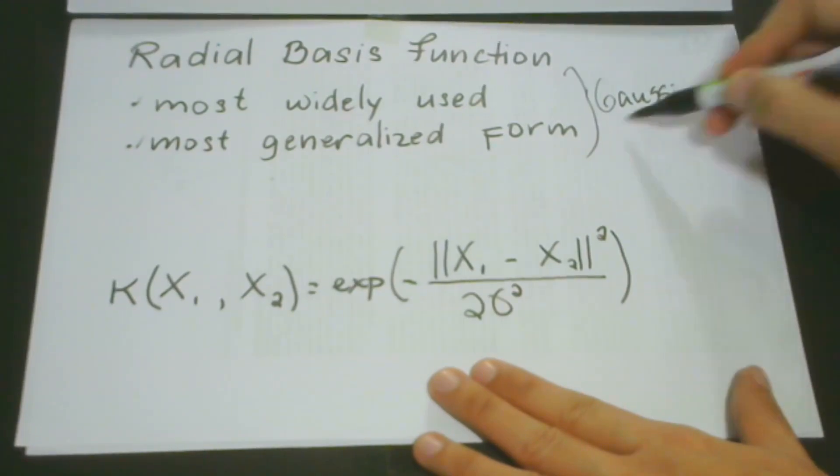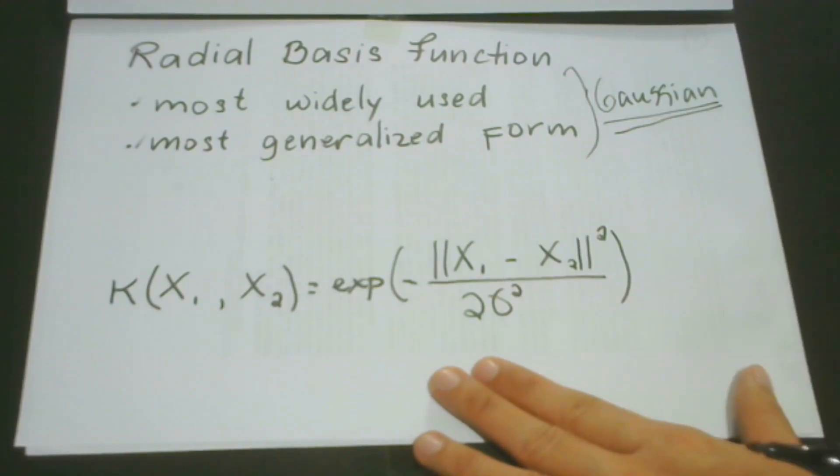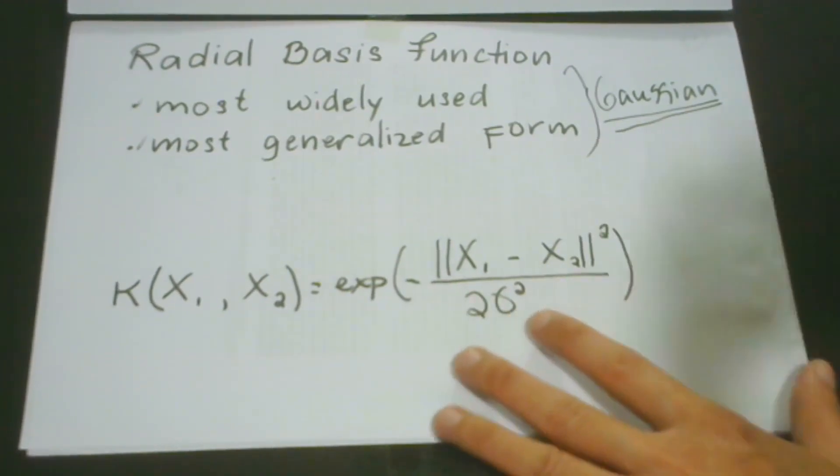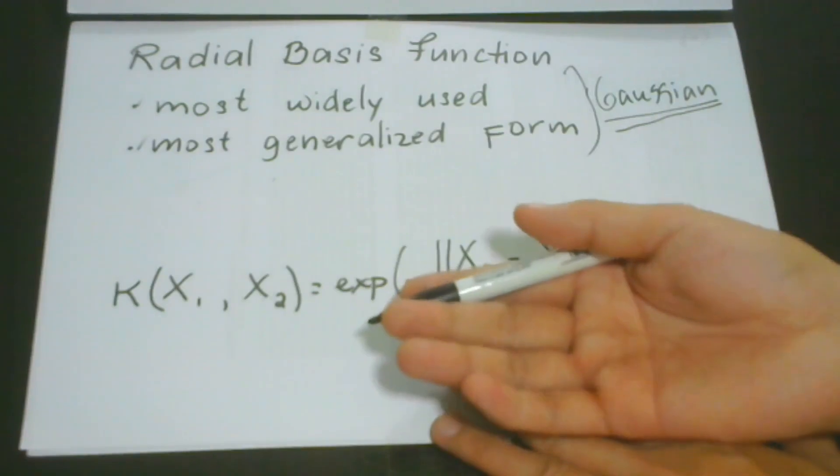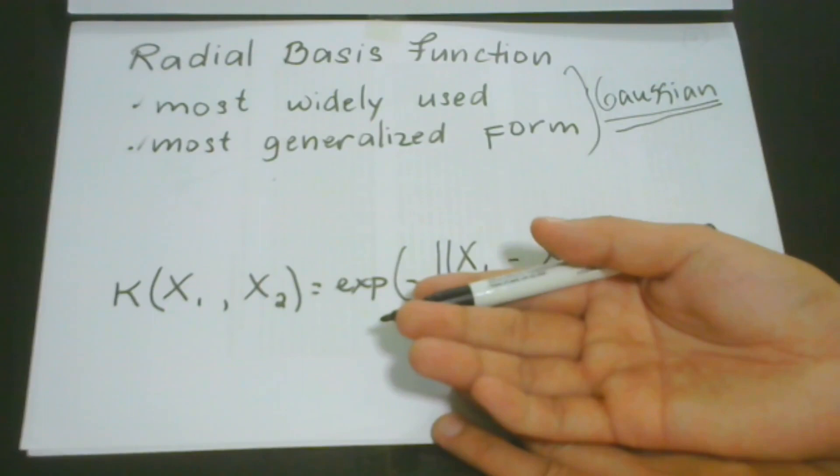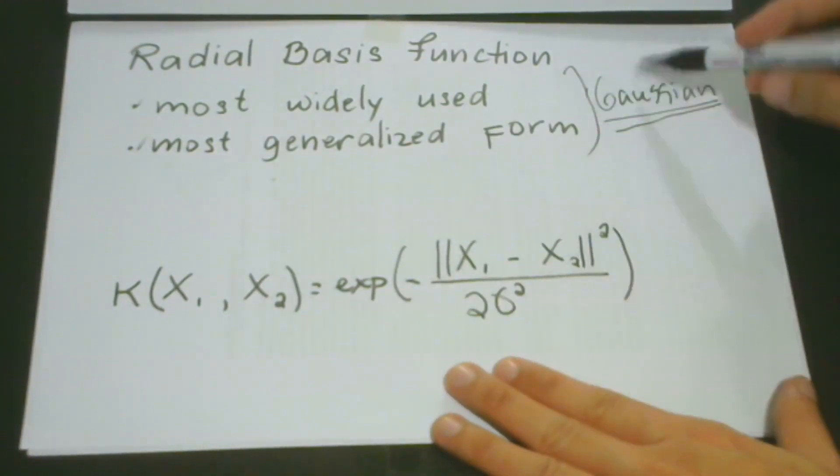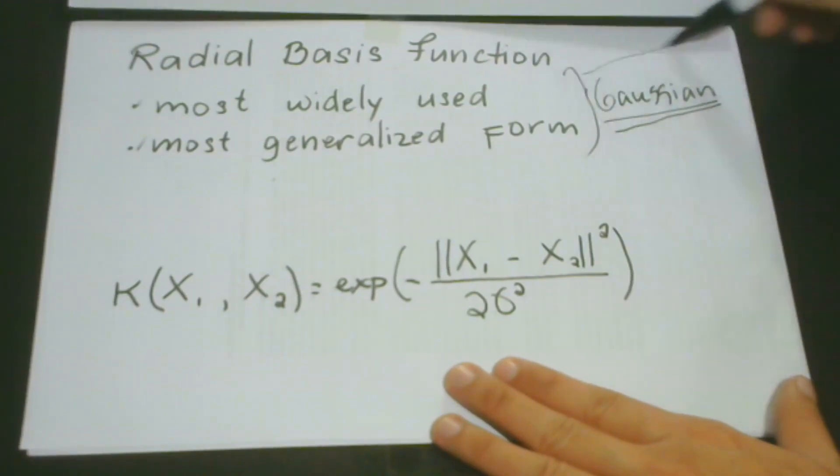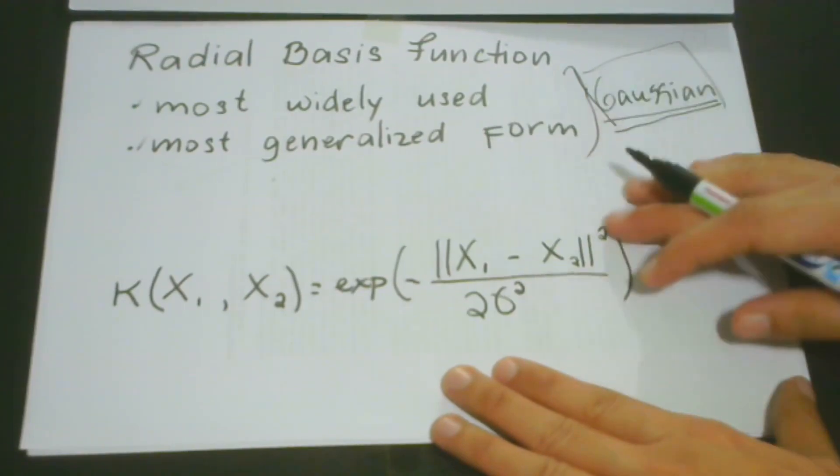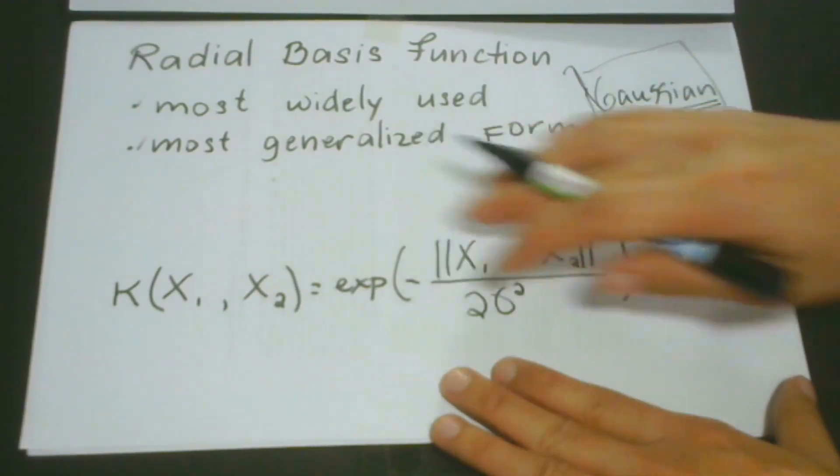So these two can be attributed to the fact that RBF is very similar to a Gaussian distribution. And we know that Gaussian distribution is always our assumption when we do a regression method. And actually in regression method, we always transform different values, especially when there's great discrepancies between and among different values. So what we do is that we transform these values so we can at least see a Gaussian distribution. So that is why it is the most widely used and it is the most generalized form.